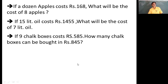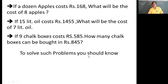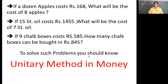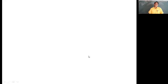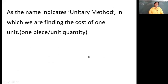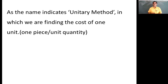Now how to find out these values? For that you should know what is meant by the unitary method in money. As the name indicates, 'unitary' — unit means one: one piece, one quantity, one unit quantity. So in the unitary method we are first of all going to find the cost of one item when the cost of many items are given.